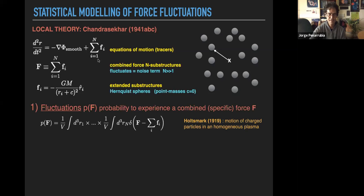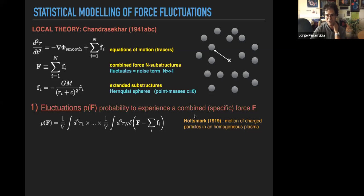Chandrasekhar's first question was: what is the spectrum of force fluctuations? Each individual force depends on the relative location of the particles; these particles move, so the relative location changes with time, causing fluctuations in the combined force F. You can calculate the spectrum of force fluctuations. This is based on the work that Holtzmark did in 1919, investigating the motion of charged particles in a plasma. Chandrasekhar basically changed the electromagnetic forces to gravitational forces and everything could be used again.